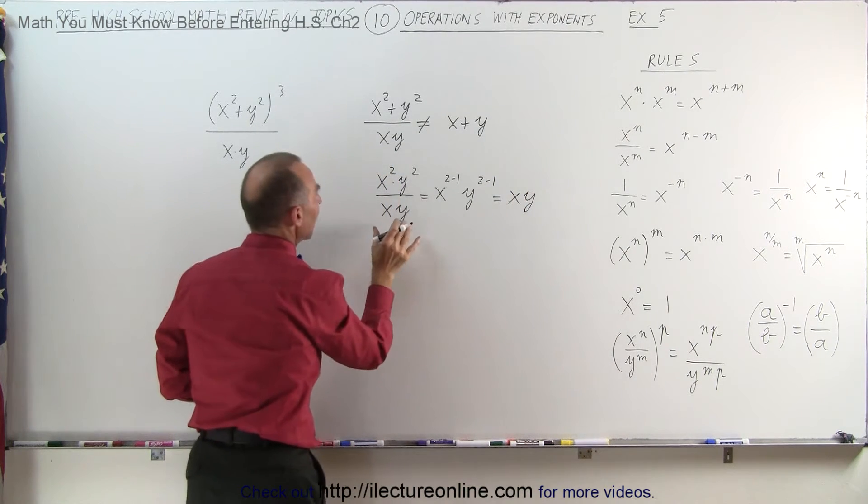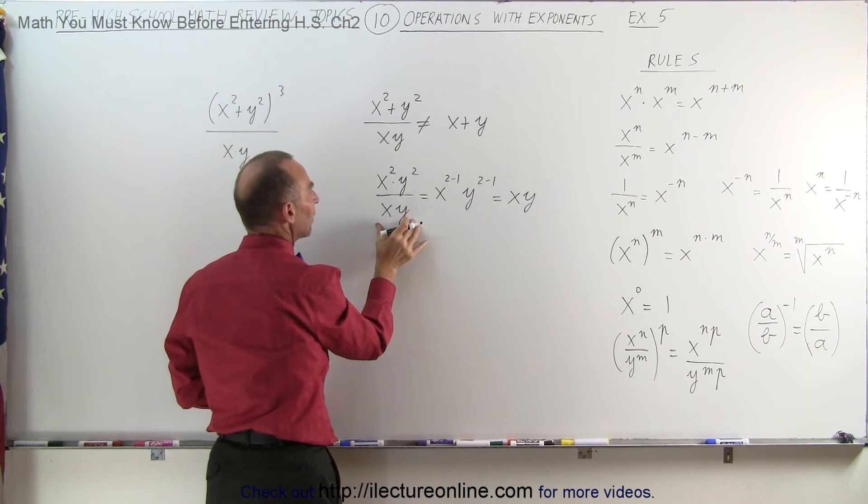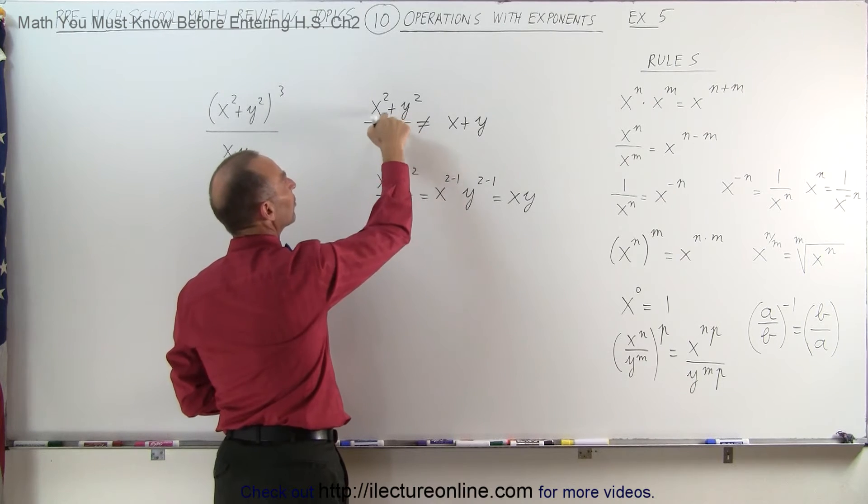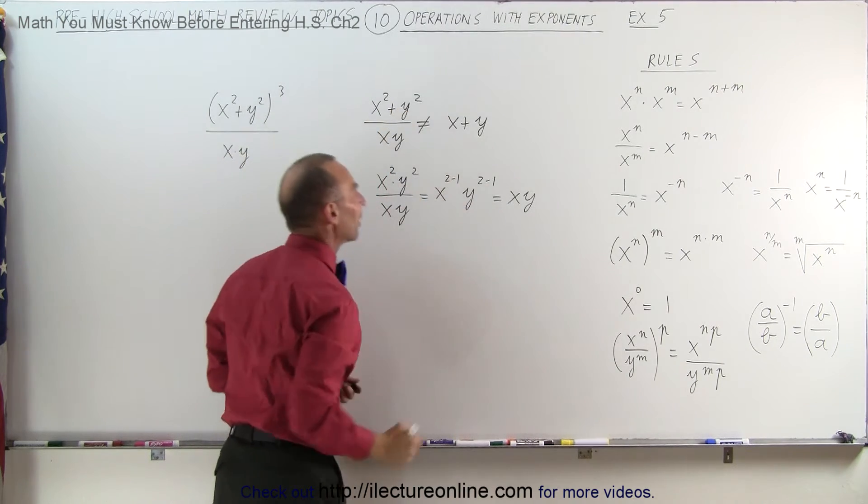In this case, you can divide the x and the y in the denominator into the numerator, because this is multiplied. Here you cannot do it, because it's x squared plus y squared.